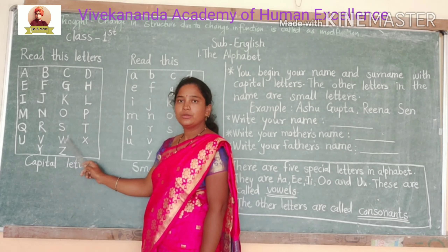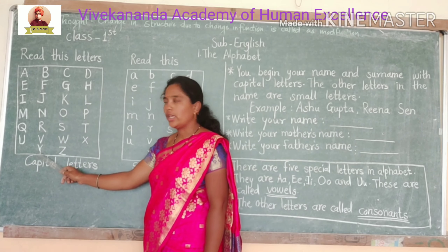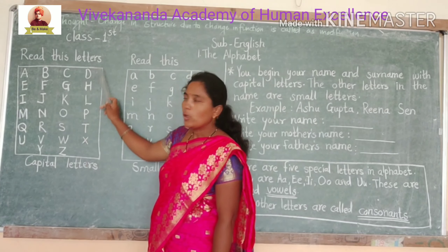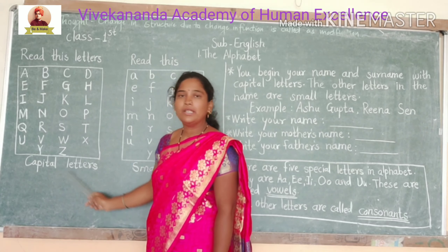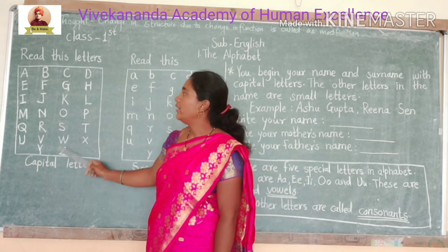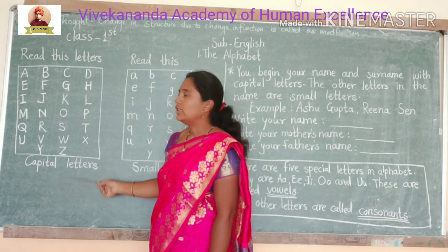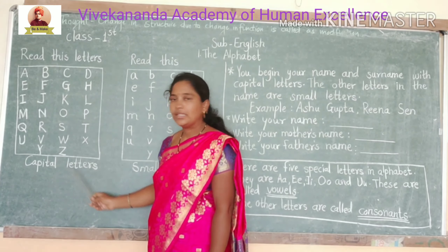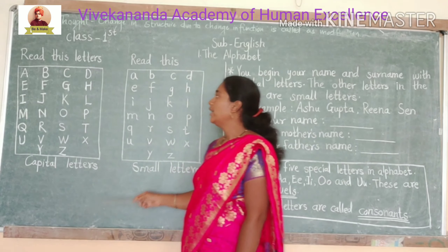W, X, Y and Z. These all letters are called capital letters. When we write the letters like this, these letters are called capital letters.